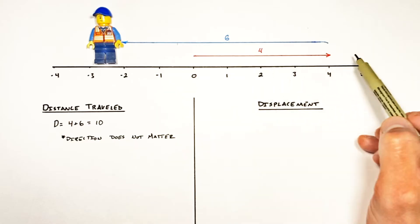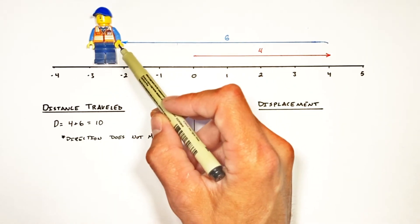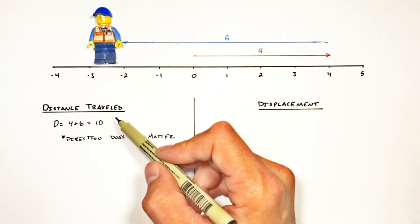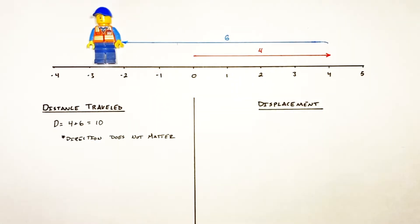And so having him go right and then left, that was irrelevant. If he's got a little fitness tracker or step counter or something like that, it still says he's traveled ten, regardless of which way he went.